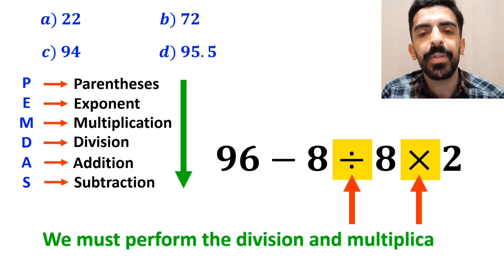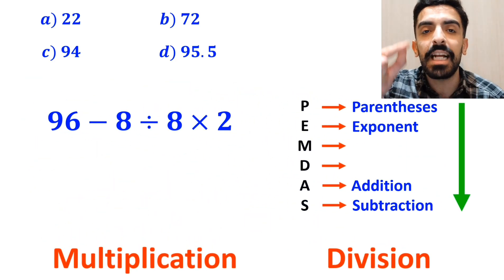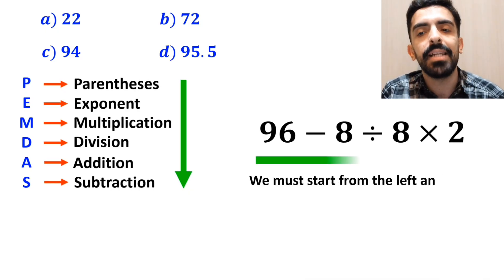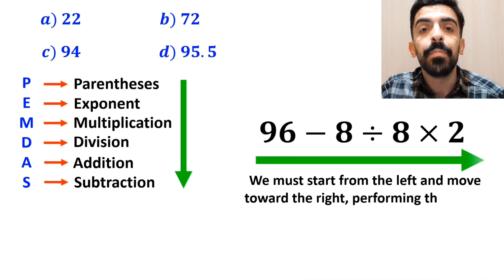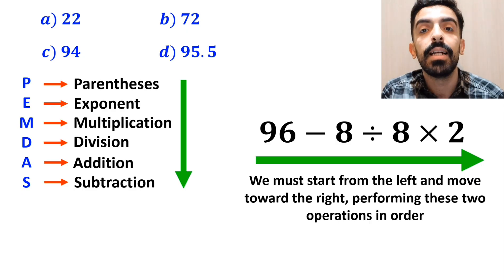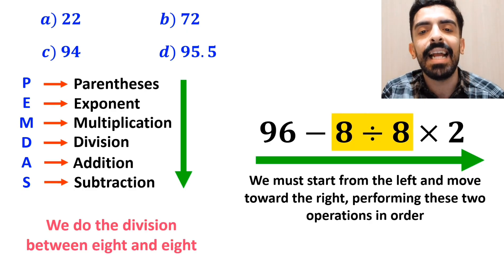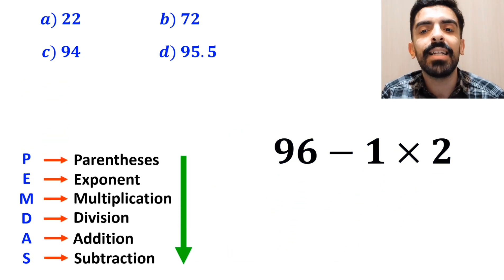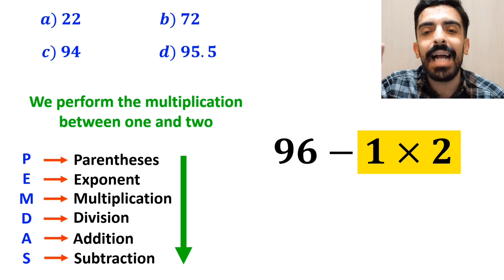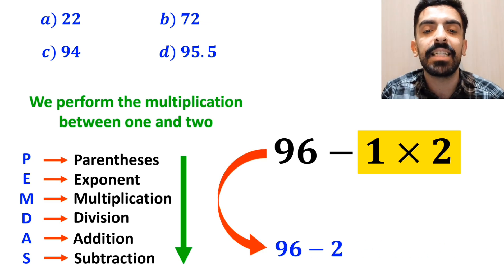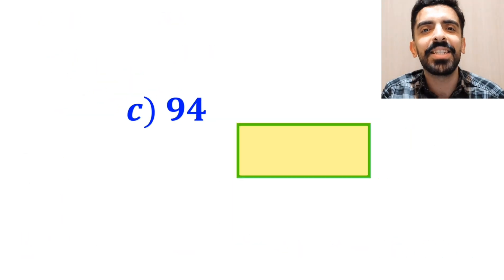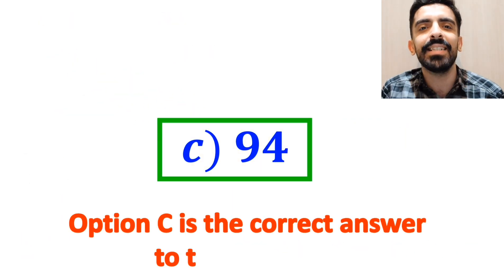Then we must perform the division and multiplication. However, it's really important to understand that in the PEMDAS rule, multiplication and division have the same level of priority. In this situation, we must start from the left and move toward the right, performing these two operations in order. So first we do the division between 8 and 8, and this expression simplifies to 96 minus 1 times 2. In the final step, we perform the multiplication between 1 and 2, which simplifies this expression to 96 minus 2. And finally, the value of this expression is 94. Option C is the correct answer to this question.